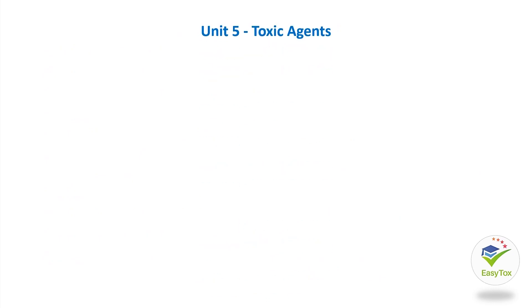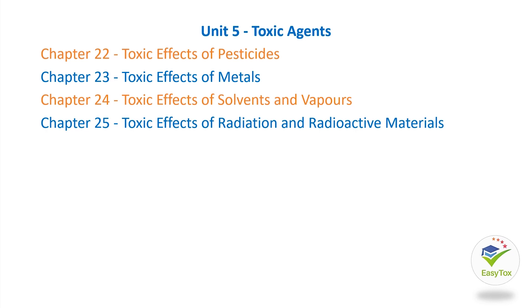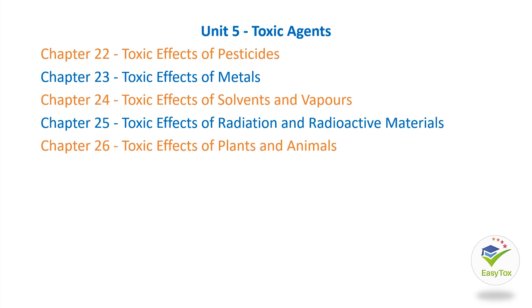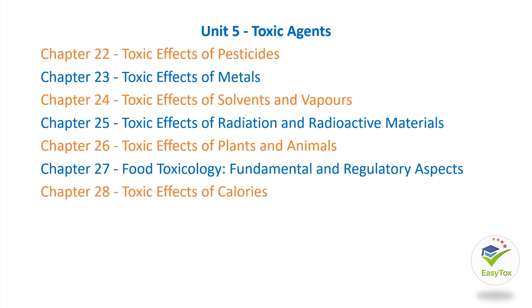Unit 5, Toxic Agents, contains 8 chapters: Chapter 22, Toxic Effects of Pesticides; Chapter 23, Toxic Effects of Metals; Chapter 24, Toxic Effects of Solvents and Vapors; Chapter 25, Toxic Effects of Radiation and Radioactive Materials; Chapter 26, Toxic Effects of Plants and Animals; Chapter 27, Food Toxicology: Fundamental and Regulatory Aspects; Chapter 28, Toxic Effects of Calories; Chapter 29, Nanoparticle Toxicology.